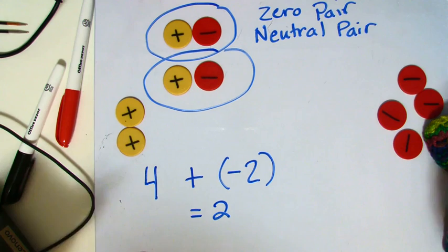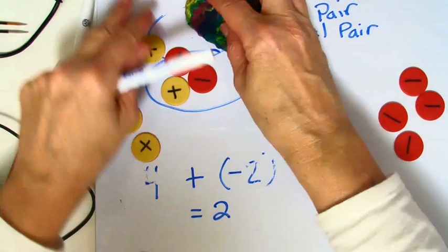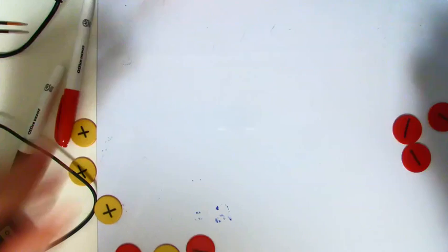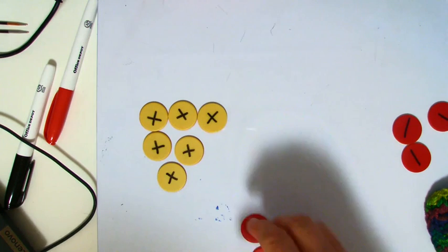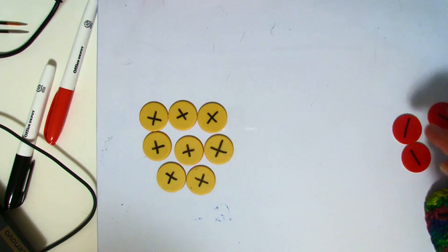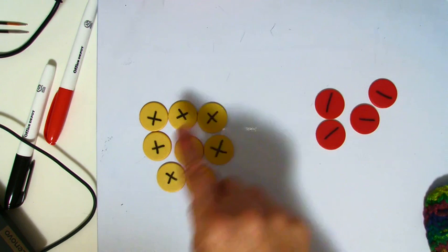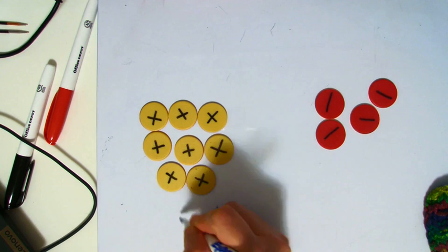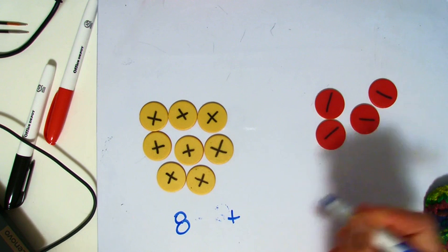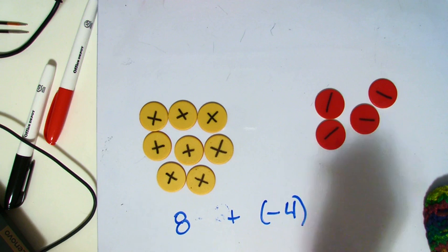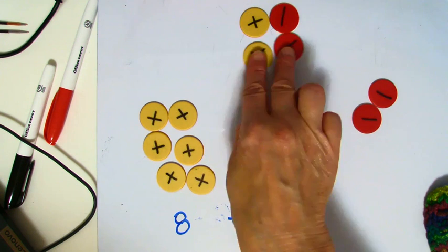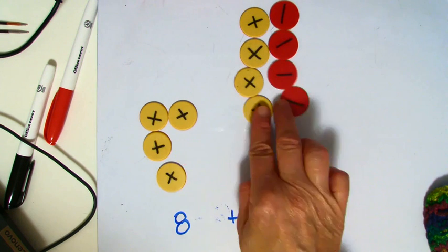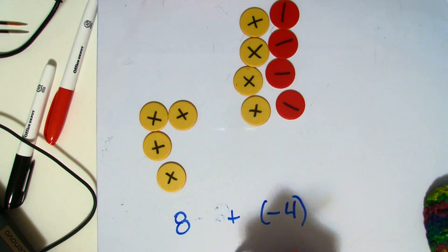Let's do a couple more of those. So here we have eight positives. And we're going to add to that negative four, or four negatives. We're going to pair these up for as many as we can. And what's left is a positive four.